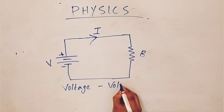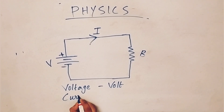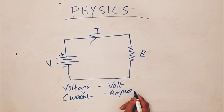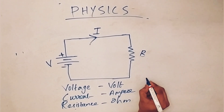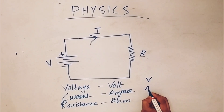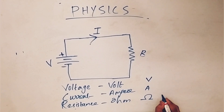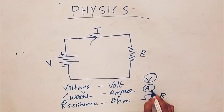Voltage — the unit is Volt. Current — the unit is Ampere. Resistance — the unit is Ohm. The letter for voltage is V, for current is A, for resistance is R. That is the unit — Ohm. Denoted R.